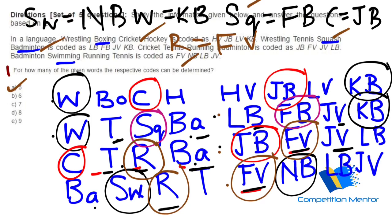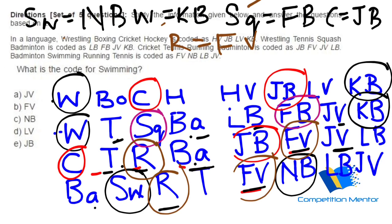Do not erase any of these because this will help you with the next questions. Now this is question number two, which says: what is the code for swimming? We already obtained SW equals NB. The option should be C — no problem in marking and moving when you have the whole chart ready.